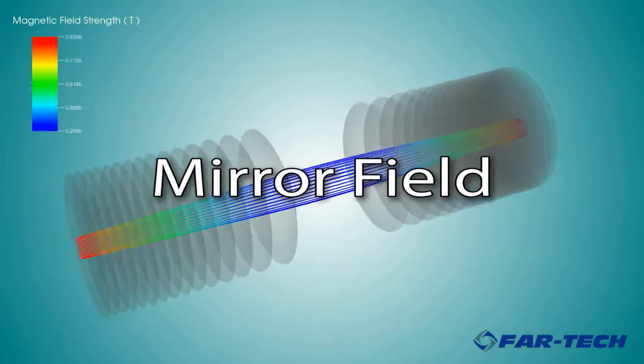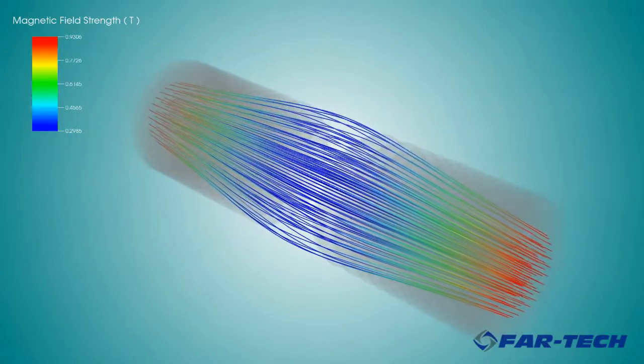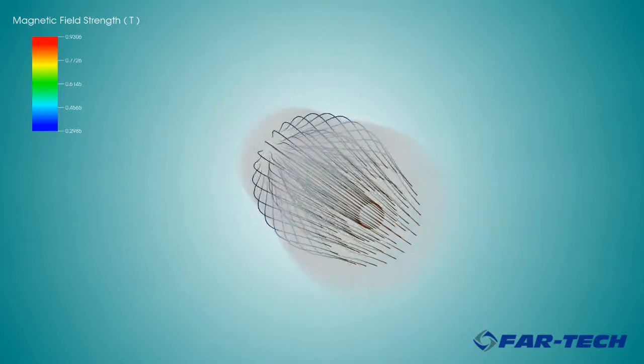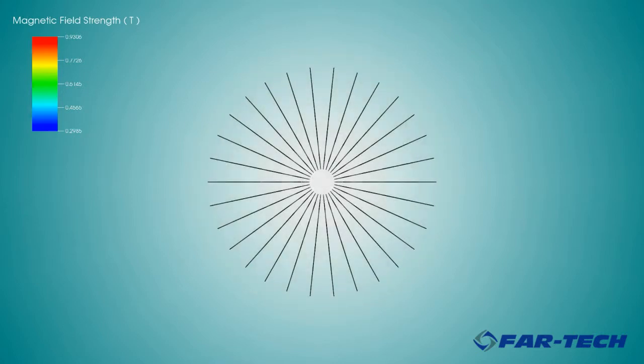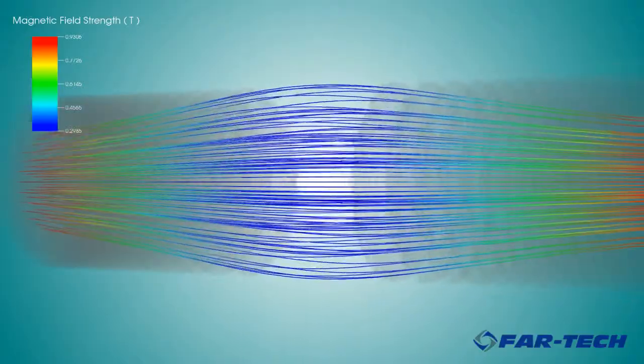The coils generate a magnetic mirror field which provides axial confinement of the plasma, making electrons bounce back and forth axially. Here the curves are the magnetic field lines. The gray surfaces are surfaces of constant field strength. Note the strength increases axially, providing axial confinement.